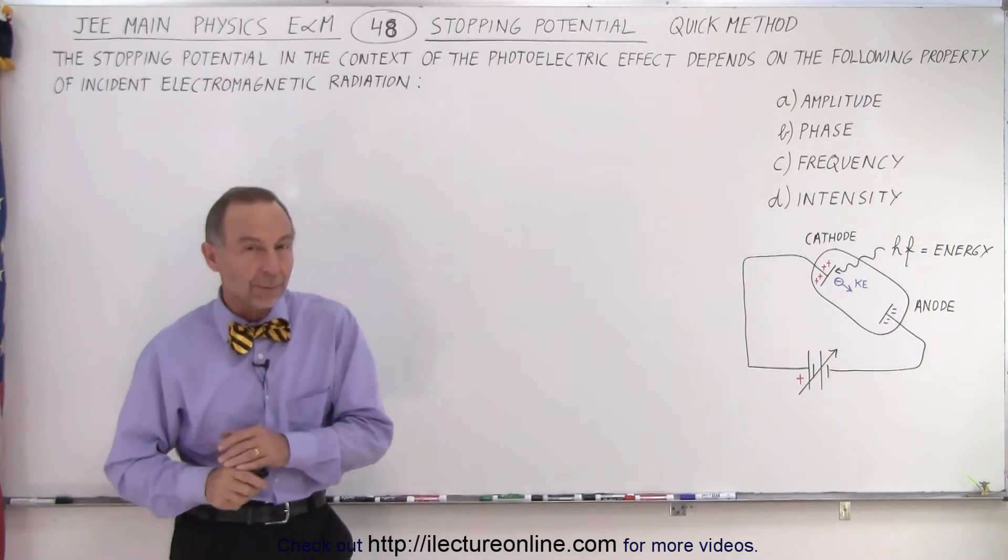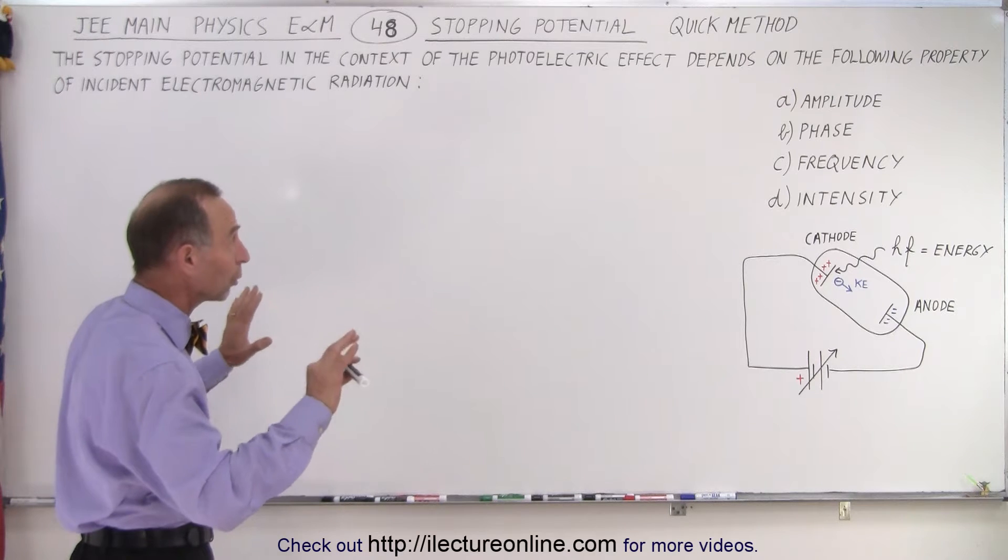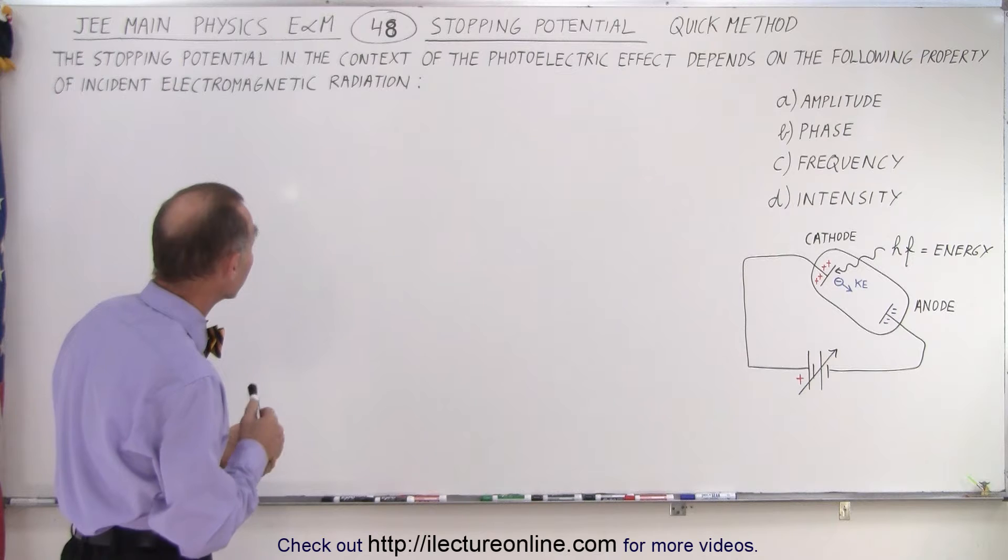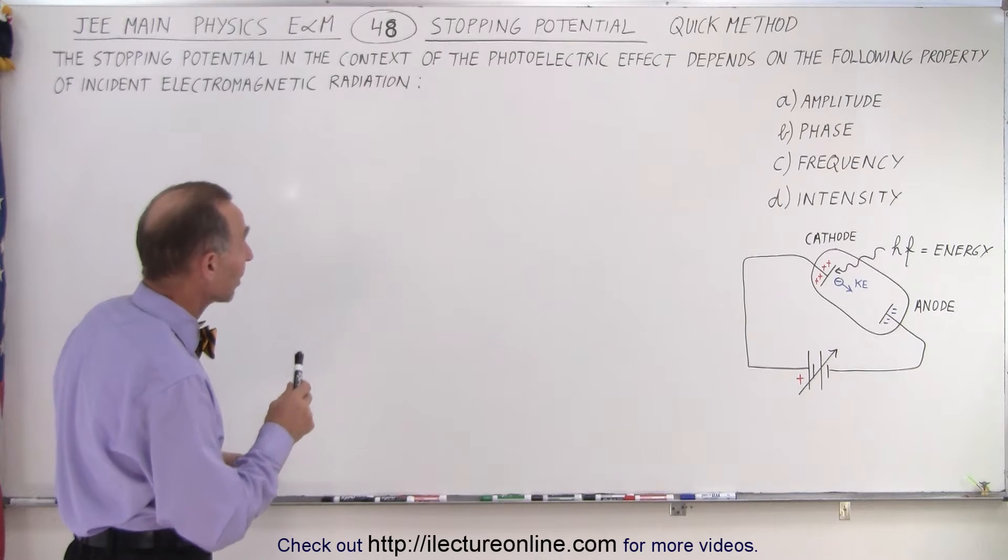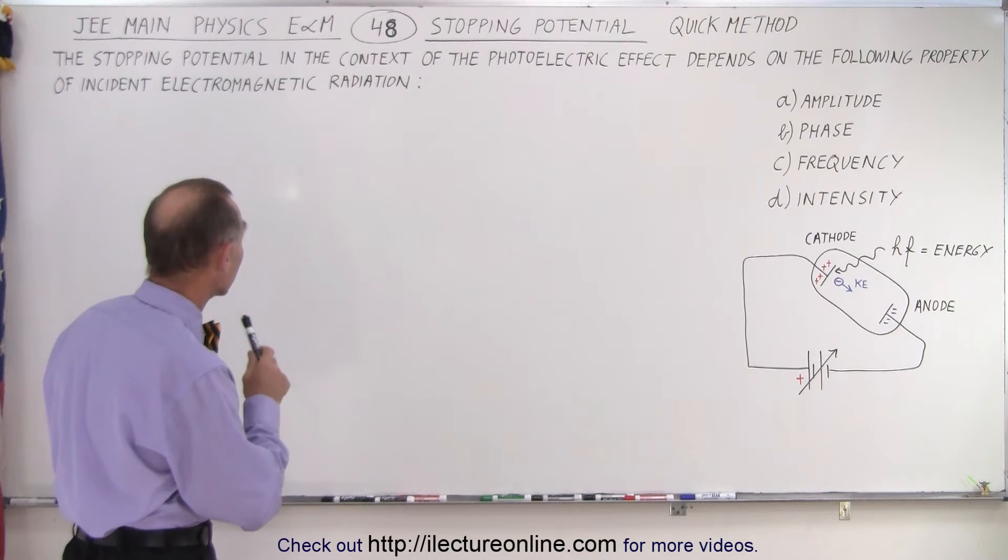So let's read the problem together and see if we can quickly get to those four possible answers and eliminate all but one of them that makes sense. The stopping potential in the context of the photoelectric effect depends on the following property of incident electromagnetic radiation.